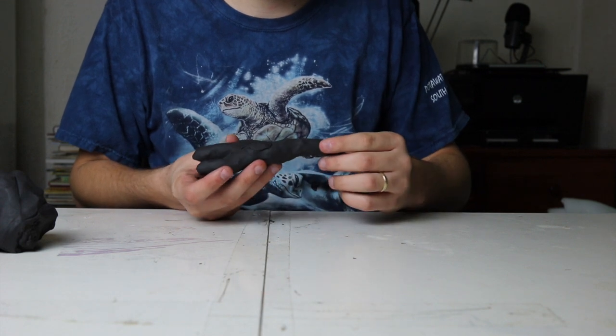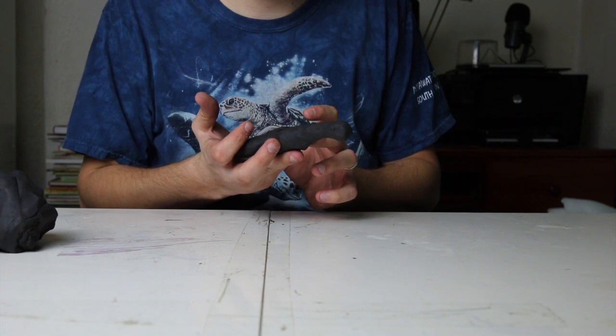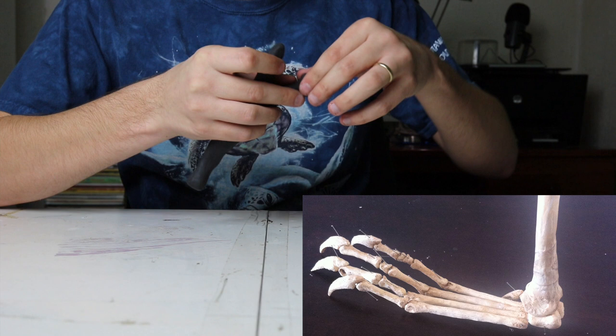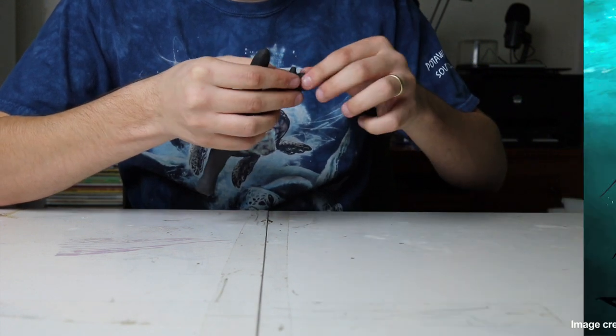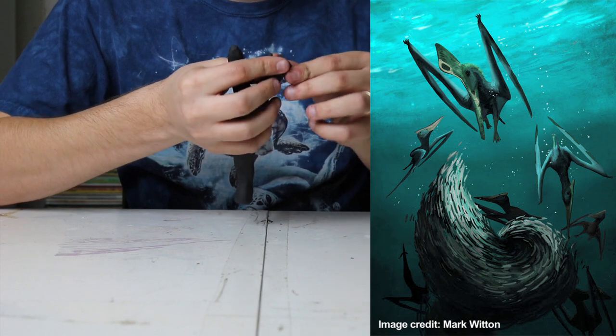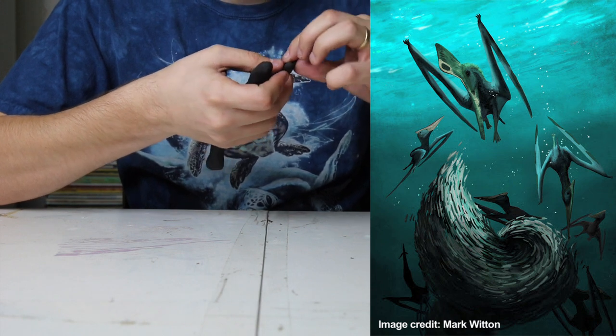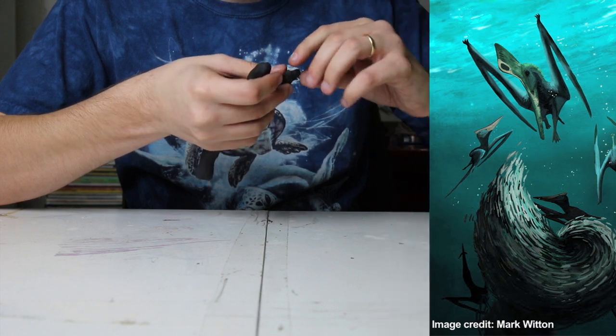You'll want to make sure the legs, neck, and torso are approximately the same size as one another. Pterodactyls had five toes on each foot, although one toe was significantly smaller than the others. It's also believed that pterosaurs were capable of swimming, so I'm adding some webbing to the toes so they'll look more like the toes of an aquatic bird.